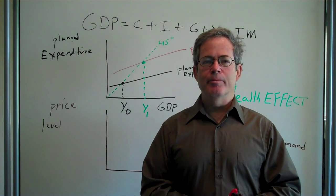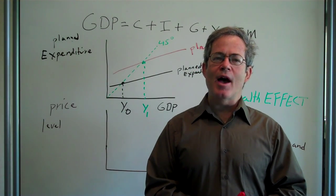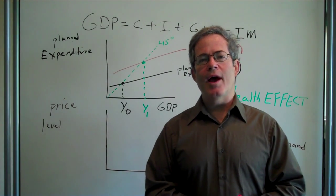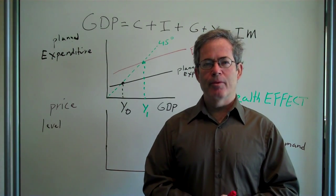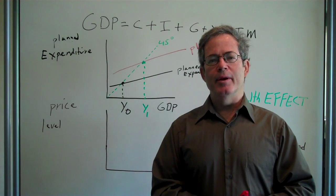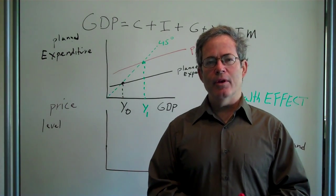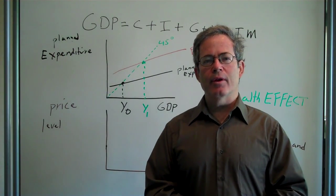Here's the main idea: What happens to desired expenditure, planned expenditure, when the price level falls? Well, here's the theory. When the price level falls, people's real wealth goes up.